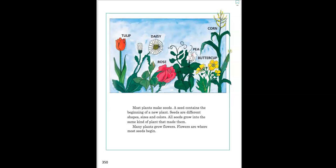Most plants make seeds. A seed contains the beginning of a new plant. Seeds are different shapes, sizes, and colors. All seeds grow into the same kind of plant that made them.